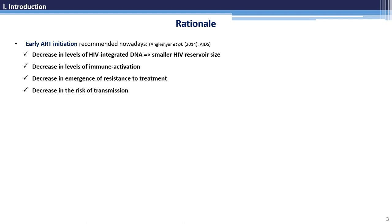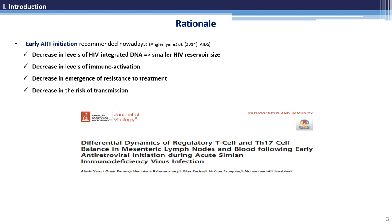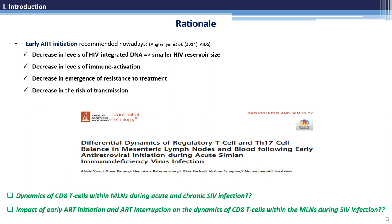since it promotes benefits like CD4 T cell recovery, immune reconstitution, and decrease in the size of the viral reservoir. In this sense, we already reported a differential dynamic of T-regs and Th17 cells in mesenteric lymph nodes compared to blood after early ART initiation during acute SIV infection in rhesus macaque. For that reason, we decided to evaluate the impact of early ART initiation and ART interruption on the dynamics of regulatory and effector CD8 T cells within the mesenteric lymph nodes of infected Chinese rhesus macaque.